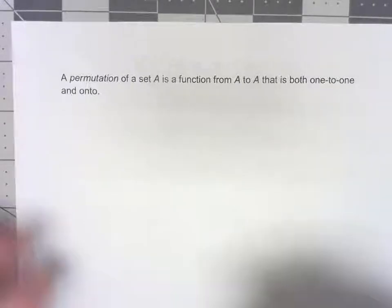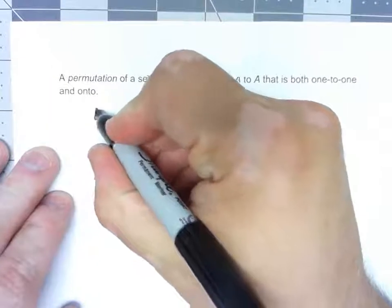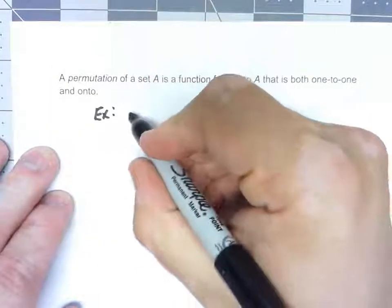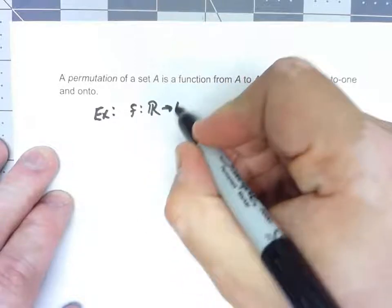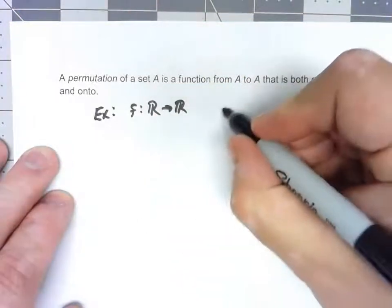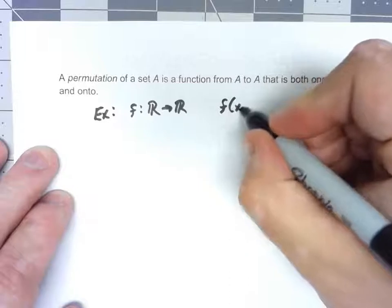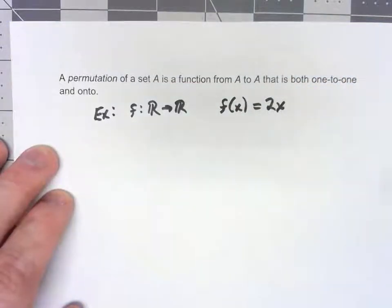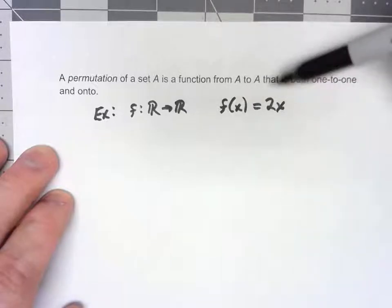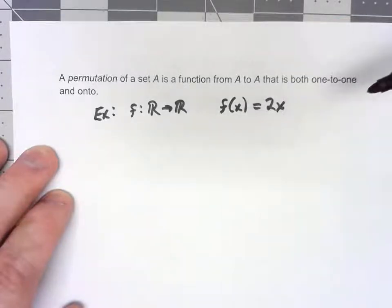So one simple example would be, say we got a function from the real numbers to the real numbers, and that function's defined by f is equal to 2x. It's very easy to show that this thing is both one-to-one and onto, so this is a permutation.